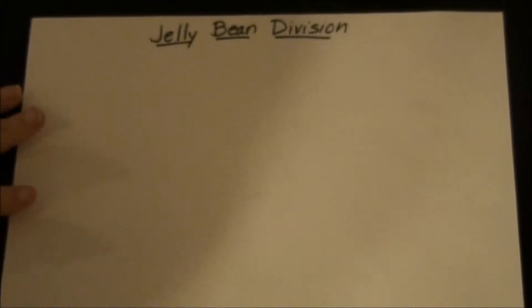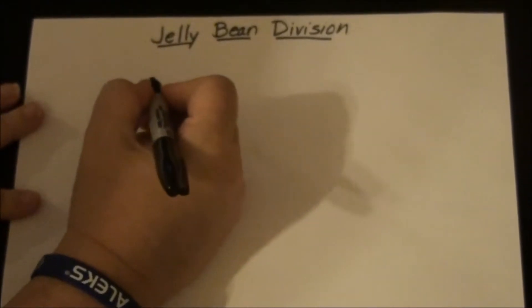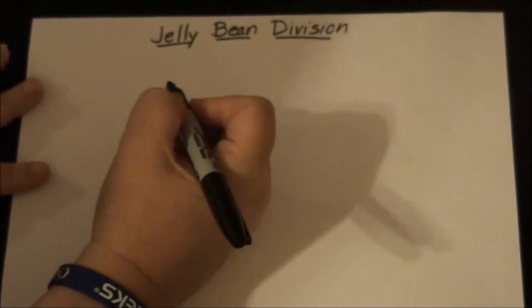This is Jelly Bean Division. This is great for third graders who have to be able to divide a multi-digit number by a single digit number, and this could be with or without a remainder.